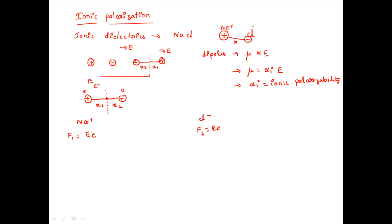Now, for these ionic crystals, whenever we apply a force they get separated. But at the same time, a restoring force will also act on these crystals to bring the ions back to their original position. The restoring force acting on the sodium ion can be written as K1·x1, where K1 is the force constant. The restoring force acting on the chlorine ion can be written as K2·x2. So we have eE, K1·x1, and eE, K2·x2.